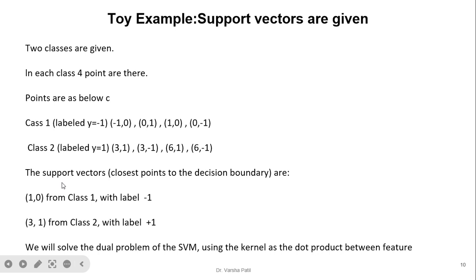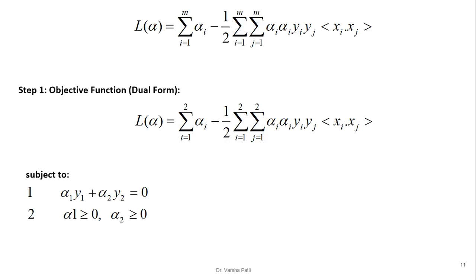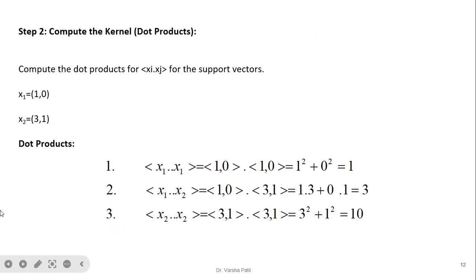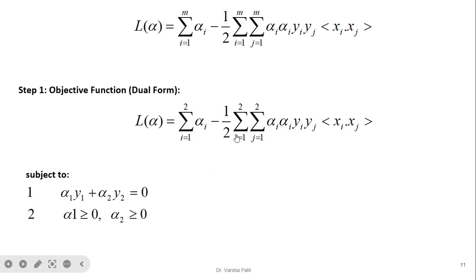Since we have already decided that 2 points are the support vectors — one from each class — our dual objective becomes summation from 1 to 2 of alpha_i, minus one-half times the double summation of alpha_i * alpha_j * y_i * y_j * (x_i · x_j). The constraint is that the summation of alpha_i * y_i equals 0, that is alpha_1 * y_1 + alpha_2 * y_2 = 0, and each alpha must be greater than or equal to 0.